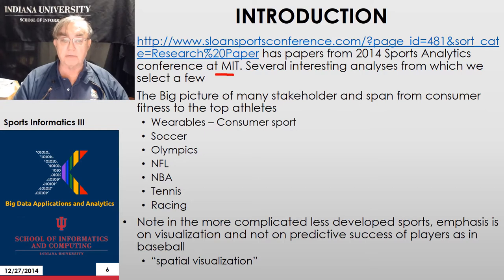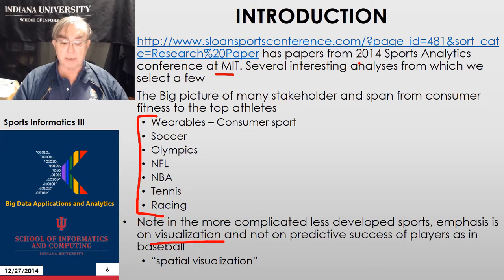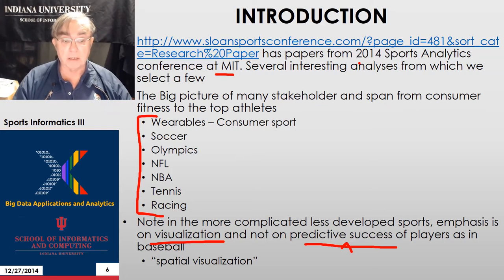This material comes from the MIT conference, and also some I found on SlideShare. The fields we're looking at in order are: wearables, soccer, Olympics, NFL, NBA, tennis, and horse racing. There's a big emphasis on visualization and not on predicting success, although we can expect prediction of success to be of growing importance. It's actually already applied in some of these areas — it's just not nearly as well-discussed as it is for baseball.